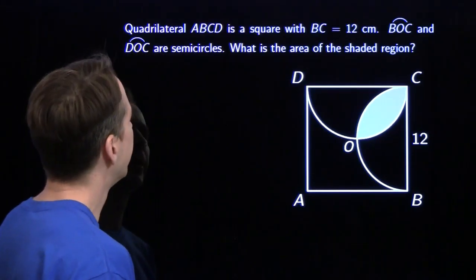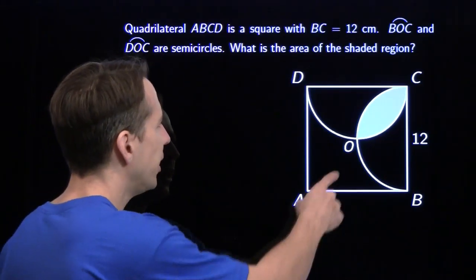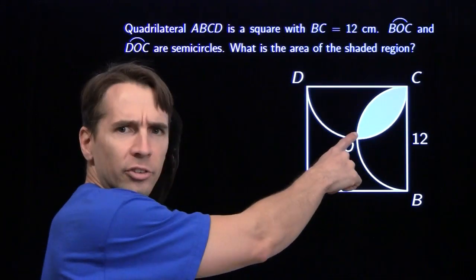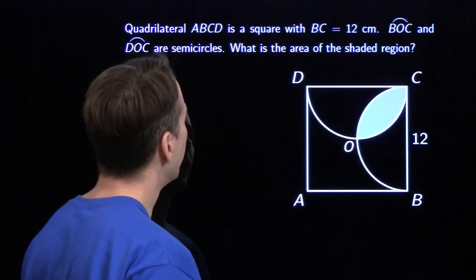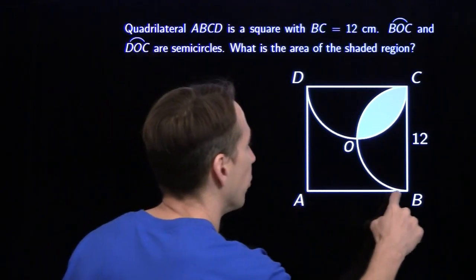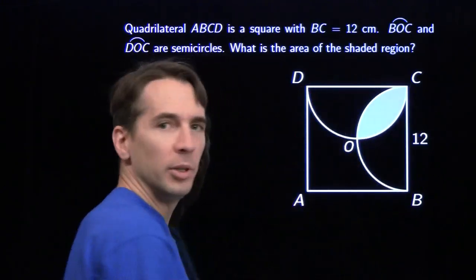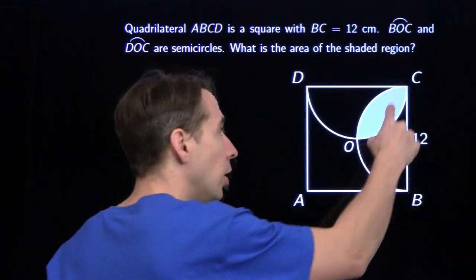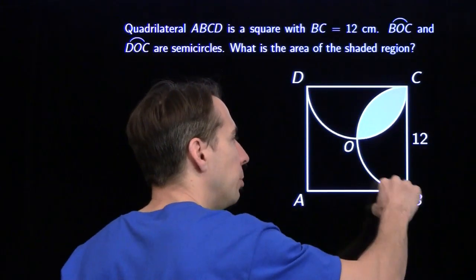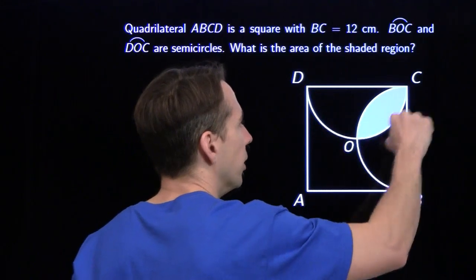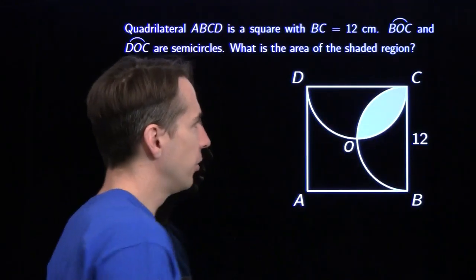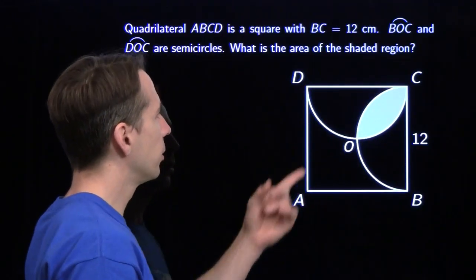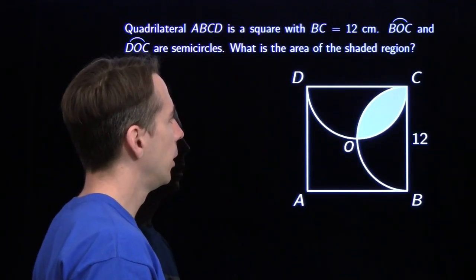Let's see what we have here. I've got to find the area of this weird leaf-shaped region, starting with a square ABCD. Side length is 12. I've got a couple of semicircles here to cut out this weird leaf.